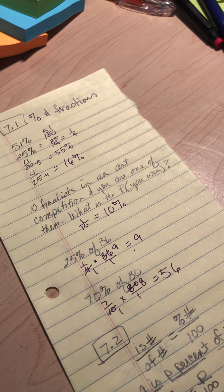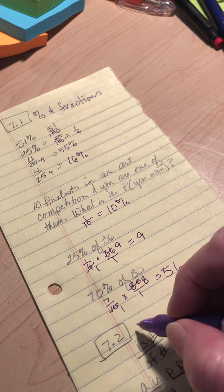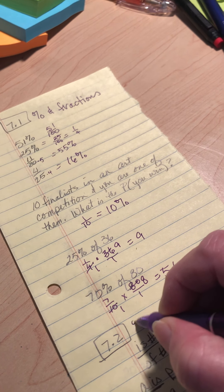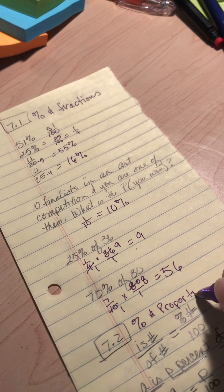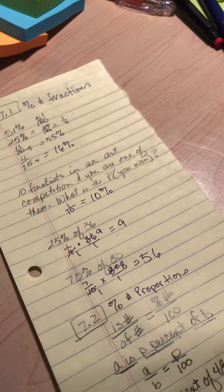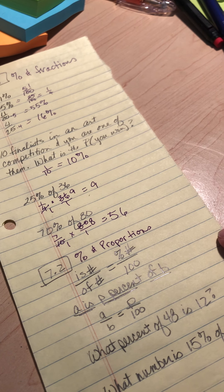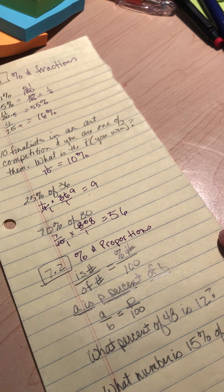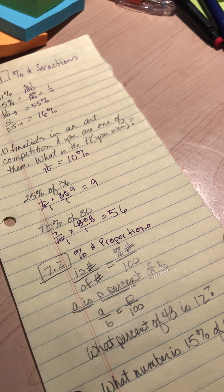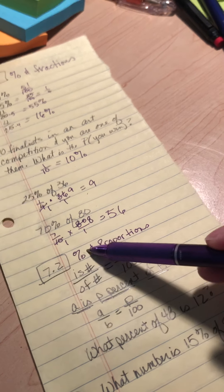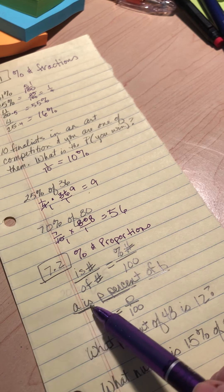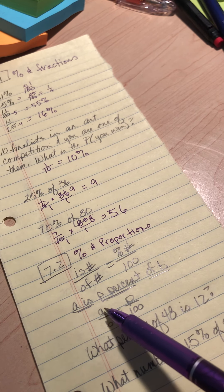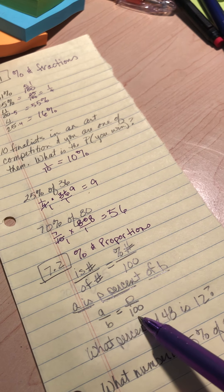Now, one of the probably the most important things is 7.2. We talked about percents and proportions. Proportions are important because you use them all over the place in algebra. Knowing how to solve a proportion is so important. But if you have a percent problem, you can set it up as a proportion. A is P percent of B translates to A over B equals P over 100 because the percent is out of 100.